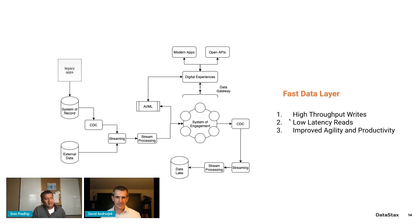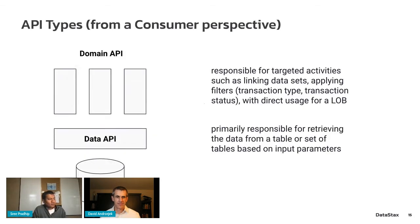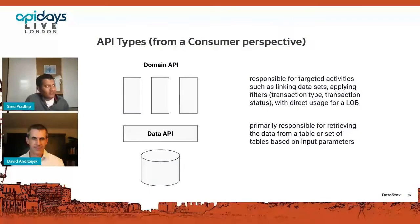The fast data layer is really about system performance: high throughput to capture transactions, and low latency reads — single-digit millisecond. But there's another way to think about 'fast': enabling developers to be agile, nimble, and productive, so you're not building a lot of API infrastructure if the data platform can give that to you out of the box. That's another dimension of what a fast data layer means.